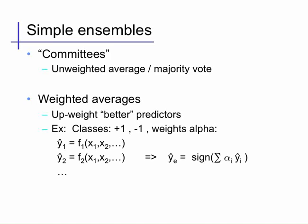More generally, you could think about using weighted averages. For example, we might believe that some of our predictors are better or more accurate than others, and we'd like to give them higher weight than the lower quality performers.